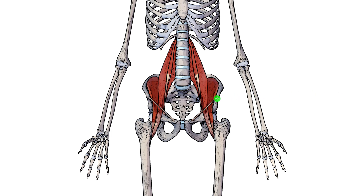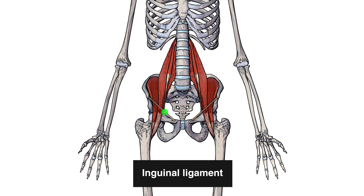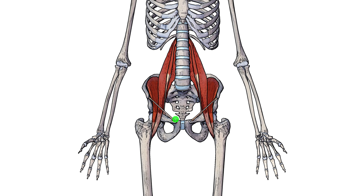I've now brought in the inguinal ligament, which connects to the anterior superior iliac spine and comes down to the pubic tubercle. One thing to note is that both the iliacus and psoas major muscle are passing underneath the inguinal ligament — so both muscles are deep to the inguinal ligament.